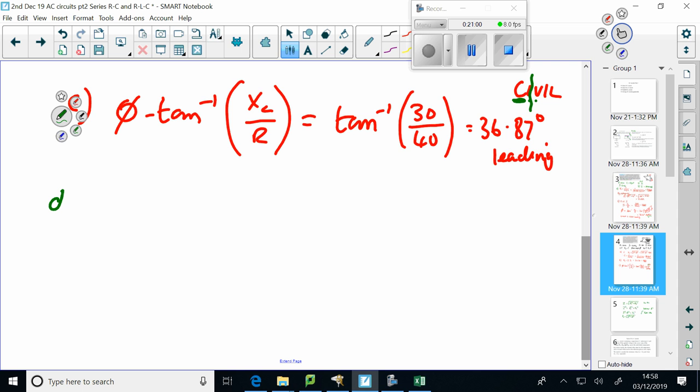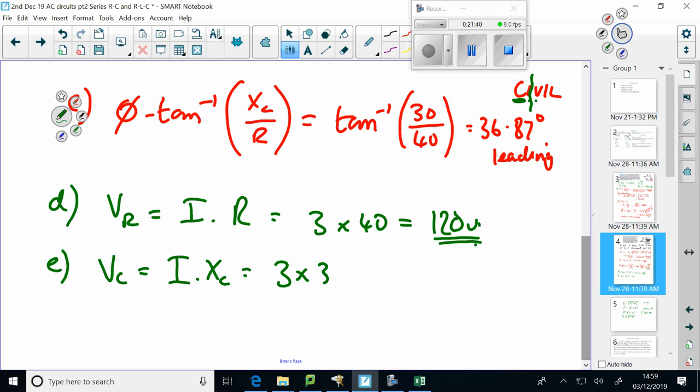And then, D, VR must equal I times the resistance R. That is 3 amps times 40 ohms equals 120 volts. And then, E, VC is equal to I times XC, which is 3 times 30 equals 90 volts.